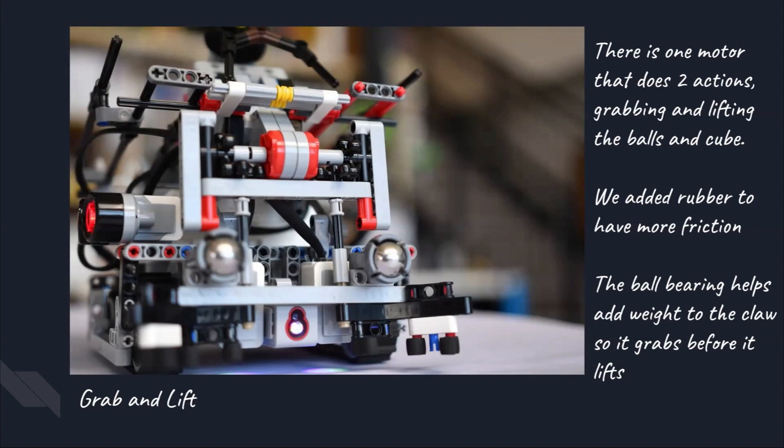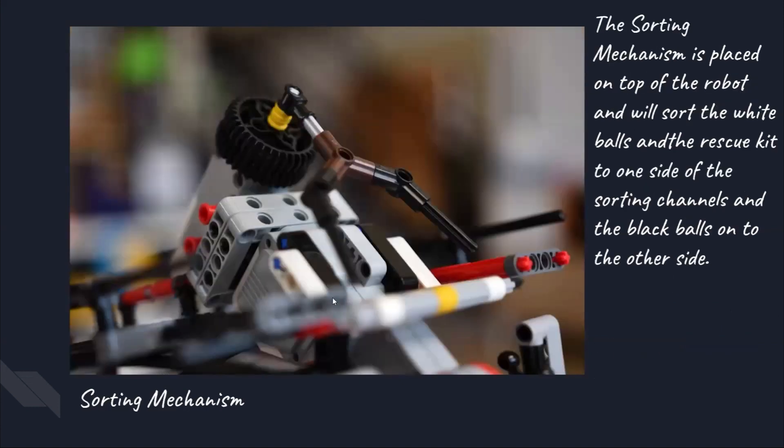Also, since the grab and lift was lifting before grabbing at the start, this meant that the claw was too light. To solve this problem, we added two ball bearings to add more weight to the claw. The grab and lift mechanism explained earlier will put the objects on the platform so that they can be sorted.